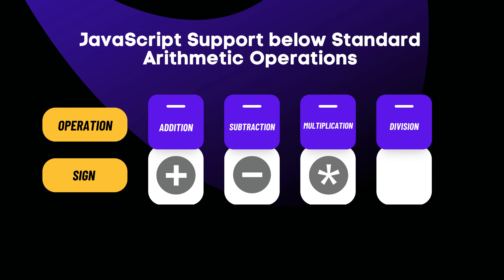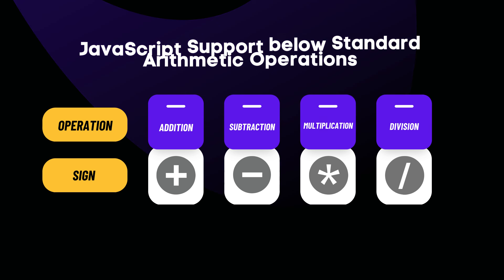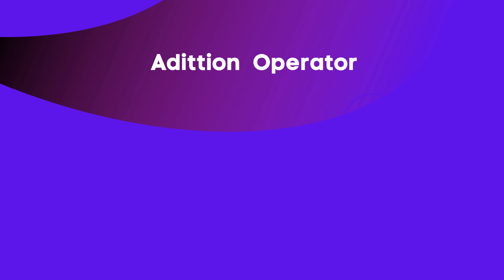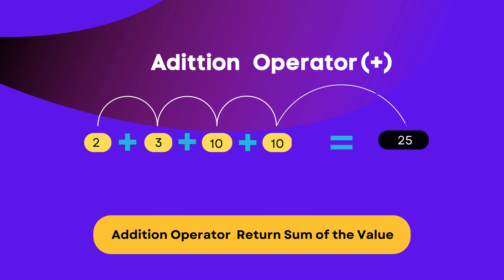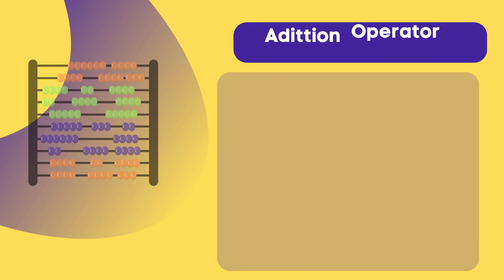The addition operator is indicated with the plus symbol. It returns the sum of all given values. For example, 2 + 3 + 10 + 10 equals 25 — it simply adds all operands and gives a result.